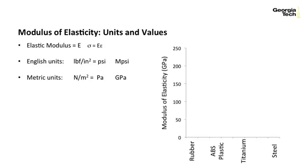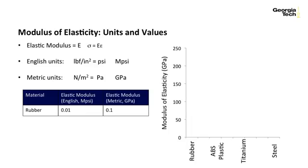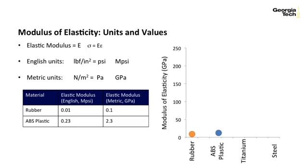Let's look at varying values of the modulus of elasticity for different engineering materials. Rubber has an elastic modulus of 0.01 mega-psi. ABS plastic, one of the more common plastics used in 3D printing, is stiffer with an elastic modulus of 0.23 mega-psi. Titanium, a common metal in the aerospace industry, has an elastic modulus of around 16 mega-psi.